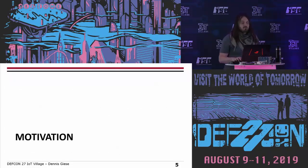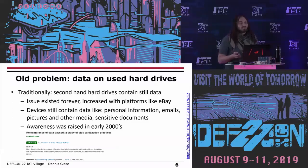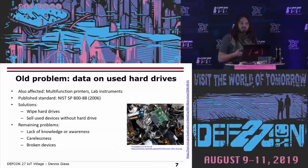Let's start with the motivation. Traditionally, there's been a long-standing problem of second-hand devices still containing data — this issue has existed since the hard drive was invented. It was amplified when people started buying and selling hard drives on eBay. Most of these drives still contained personal information: emails, pictures, other media, and sometimes even sensitive government documents. Awareness for this topic was raised in the early 2000s with research analyzing what data remained and what needed to be done to fully remove it.